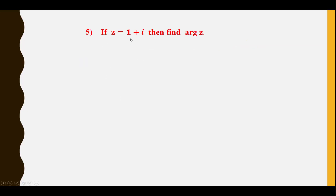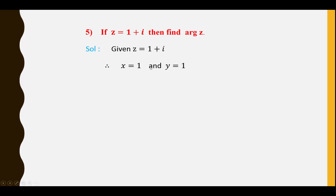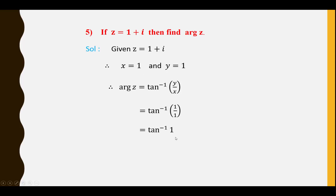Fifth question: If Z = 1 + i, find arg Z. Given Z = 1 + i, so x = 1 and y = 1. Argument Z = tan⁻¹(y/x) = tan⁻¹(1/1) = tan⁻¹(1) = π/4 (45°).